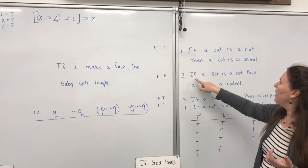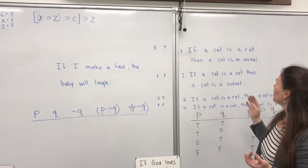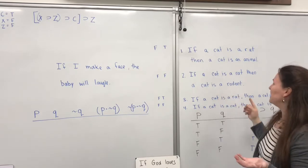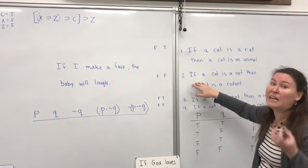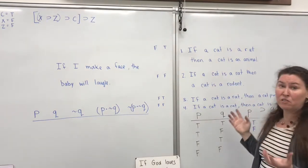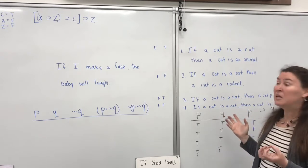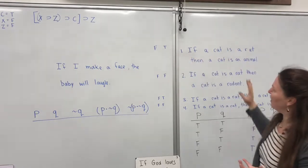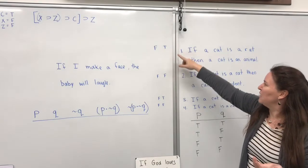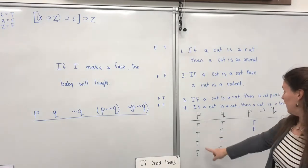Let's look at another one like that: if a cat is a rat, then a cat is a rodent. A cat isn't a rat and a cat isn't a rodent. But if in an imaginary world a cat were a rat, then that cat would be a rodent because it would be a rat. So you can sort of see how you can have a false antecedent lead to a true and false consequent, and the proposition itself be all true.